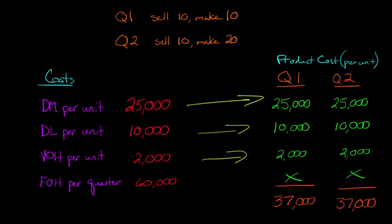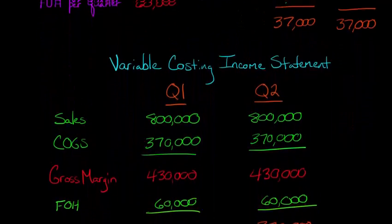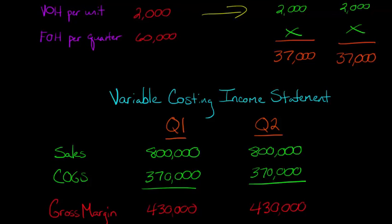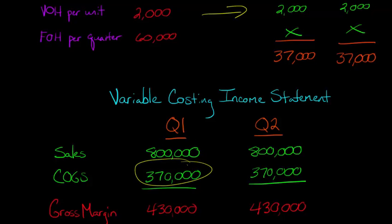When we go to compute cost of goods sold, in quarter one we sold 10 units, so 10 units flow through cost of goods sold. We multiply 10 by $37,000, which gives us $370,000. Sales are $800,000 because we sold 10 units at $80,000 each. So 10 times $37,000 gives us $370,000 for cost of goods sold, and that $37 came from our per-unit product cost calculation.